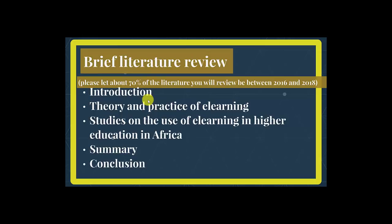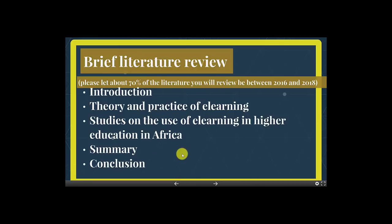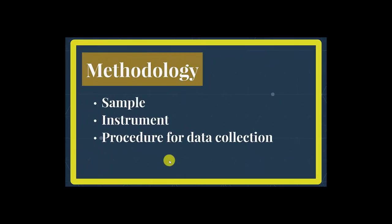What would be the subheads under my literature review? Note this is an example — yours will be different. Just ensure that you have a survey involving an online questionnaire relating to your doctoral study. For literature review I have: a short introduction, theory and practice of e-learning, studies on the use of e-learning in higher education in Africa, a summary, and then a conclusion. For methodology: I would describe how I got my 20 students, describe the instrument — an online questionnaire in two sections: section A on formation, section B assessing student perceptions.